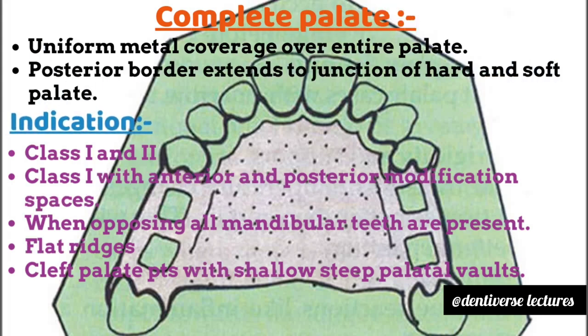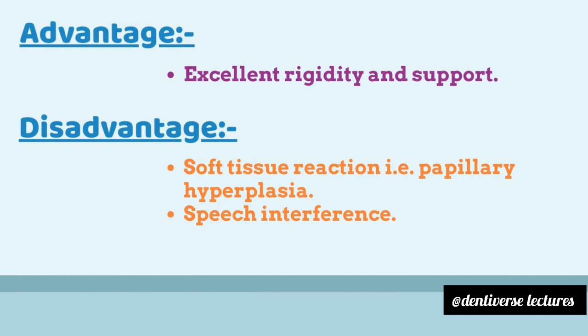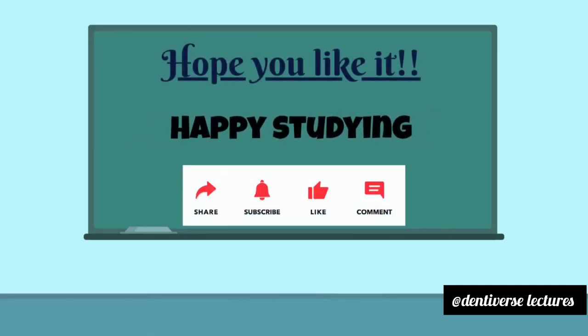The last, sixth type, is the complete palate major connector. It has uniform metal coverage over the entire palate, and its posterior border extends to the junction of the hard and soft palate. Indications are class 1 and 2, class 1 with modification spaces when opposing all mandibular teeth are present — due to which load and displacing force is increased and distributed evenly. Also indicated in cases of flat ridges, cleft palate patients, and shallow or steep palatal vault where higher stability is required. Advantages: excellent rigidity and support. Disadvantages: because of extensive coverage, adverse soft tissue reaction such as papillary hyperplasia takes place, and speech is also interfered with.